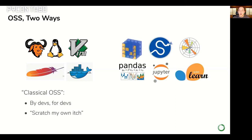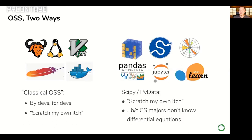However, in the scientific and numerical Python space, something a little different happened. That was still people scratching their own itch, but if you look at who wrote libraries like SciPy, Scikit-learn, and Matplotlib, these were made by people who are not traditional software developers — electrical engineers, financial quants, applied physicists. It's a lot of people who were not traditional computer science majors. They made these tools because the CS majors were too busy hacking on things like Linux and Emacs and Apache, and they didn't know the math to build what needed to get built.